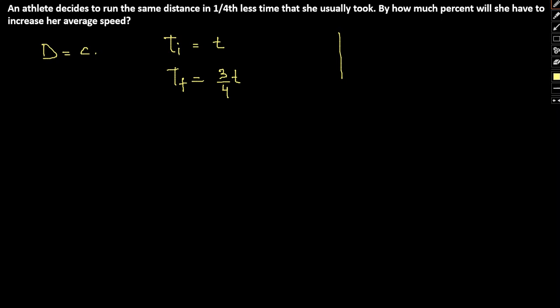Let's take you back to a very simple equation: distance equals speed into time. Now, if distance is constant, speed is inversely proportional to time. Therefore, time ratio, Ti by Tf, will always be inverse of speed ratio, that is Sf by Si.